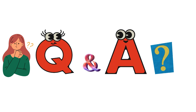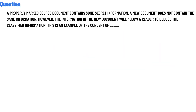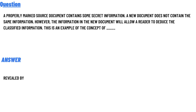Today's question: a properly marked source document contains some secret information. A new document does not contain the same information; however, the information in the new document will allow readers to use the classified information. These are an example of the concept of — the correct answer is revealed by the answer of the question.